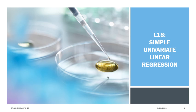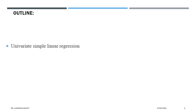This is lecture number 18, where we will talk about further examples on linear models and various perspectives. You will see the real feeling of linear models and their real applications. The outline includes univariate simple linear regression, which is the simplest linear model — it is the 'hello world' of learning from data. If you know this, you have already started learning from data.